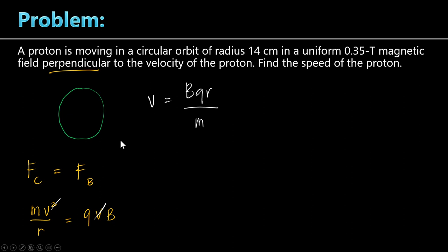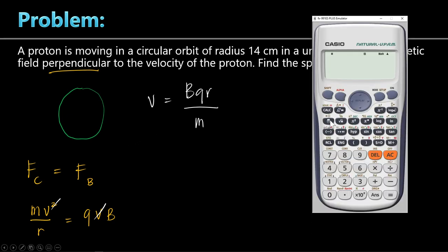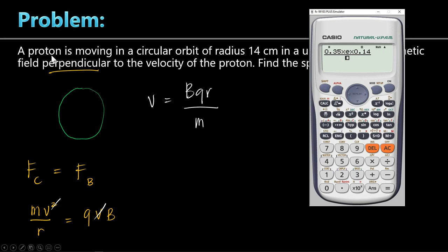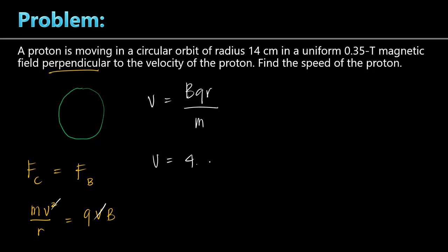Now we substitute the values into the calculator. Magnetic field 0.35 times charge of proton (constant 23) times radius 0.14 meters, divided by the mass of the proton (constant 01 in calculator). The answer is approximately 4.7 times 10 to the 6 meters per second. So the proton is moving at 4.7 million meters per second.